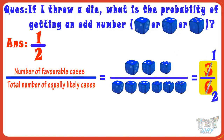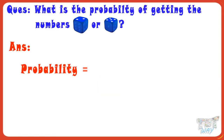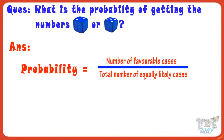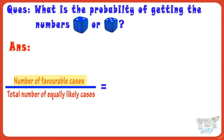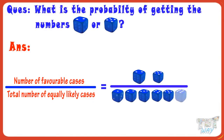Now, let's take another example. What is the probability of getting the numbers 2 or 5 on the dice? We know the probability is number of favorable cases divided by total number of equally likely cases. Number of favorable cases here are 2, that is, getting numbers 2 or 5. Total number of cases are 6. We know there are 6 numbers on the dice, numbered from 1 to 6. So, the probability of getting numbers 2 or 5 is 2 by 6, or 1 by 3.